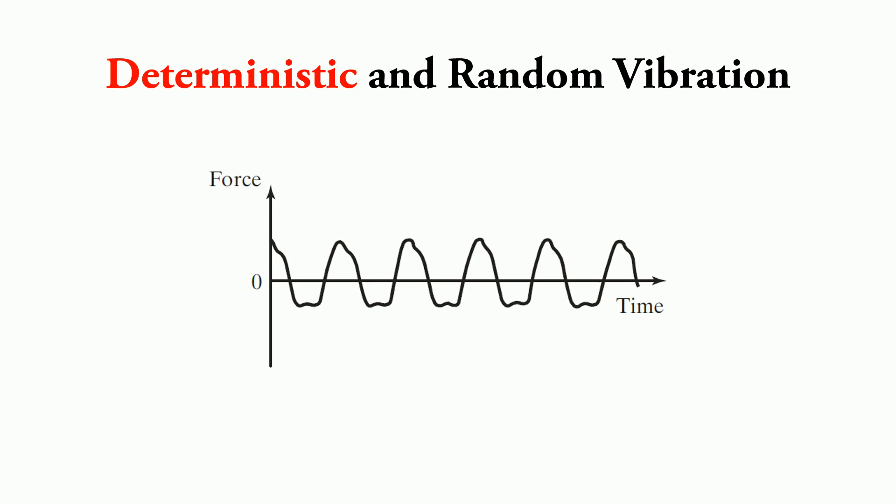Deterministic and random vibration. If the magnitude of the excitation acting on a vibratory system is known at any given time, the excitation is called deterministic.